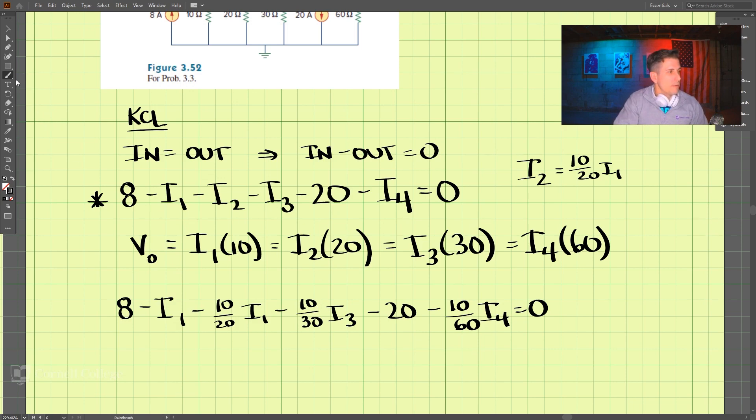Well, I messed up here, made a mistake, these should be I1, I1 there. Okay, so we have all of these, in terms of I1, we solve for I1, and that is equal to negative 6 amps.